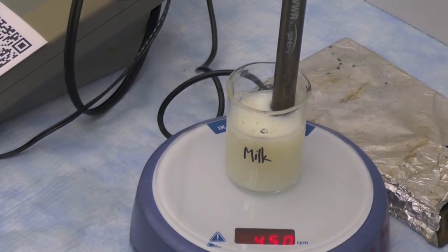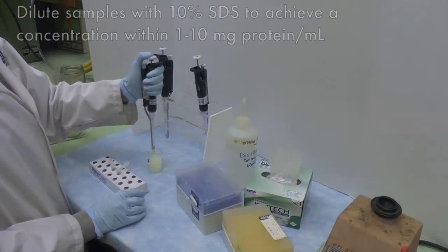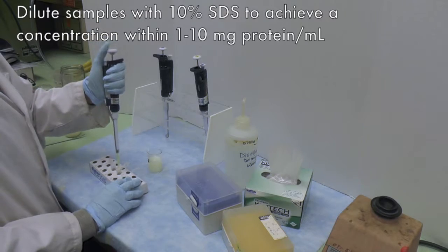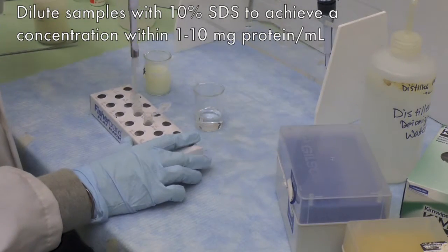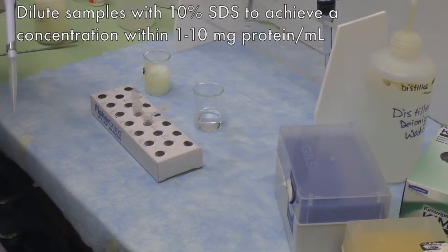First, measure the pH of the milk samples. Dilute the milk samples with 10% SDS in a microfuge tube to a range within 1 to 10 mg protein per milliliter.